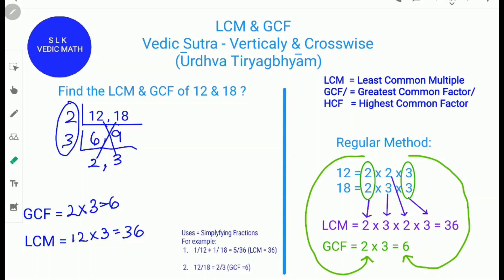The uses of LCM and GCF are to simplify fractions. For example, 1/12 plus 1/18 equals 5/36 — we find the LCM of 12 and 18 to get the answer. Another use is finding the equivalent fraction of 12/18: since the numerator and denominator share common factors, divide both by the GCF, which is 6, giving the equivalent fraction 2/3.